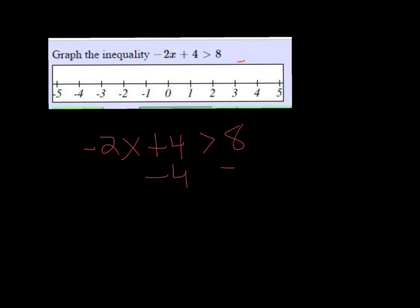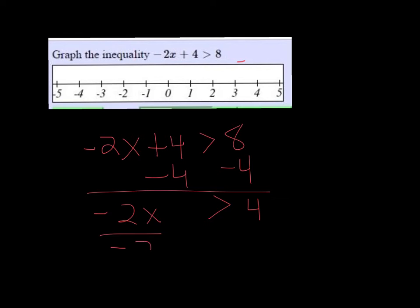Alright, subtract 4 on both sides. Bring down the negative 2x — we have negative 2x is greater than 4. Then we divide by negative 2 and flip the inequality, so we get x is less than negative 2.